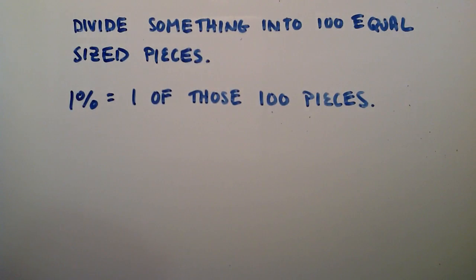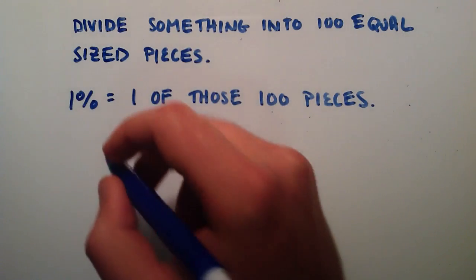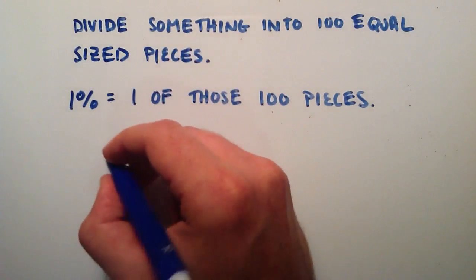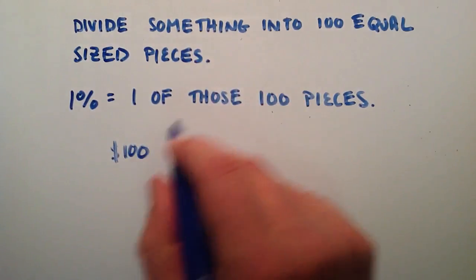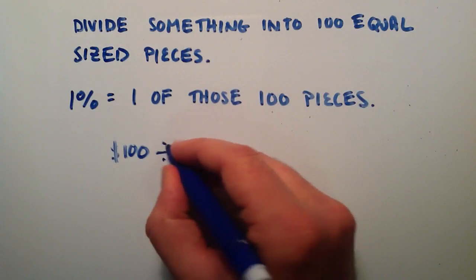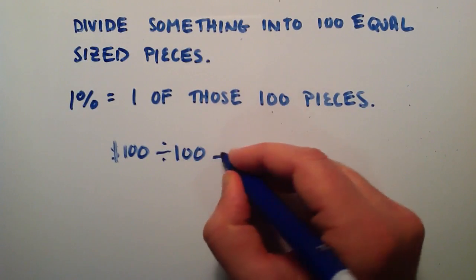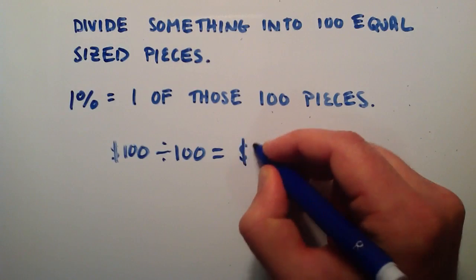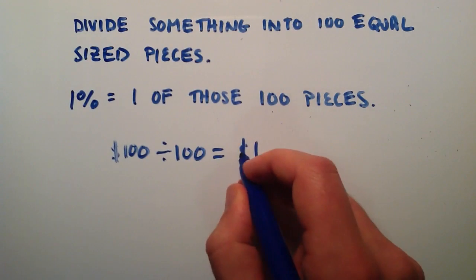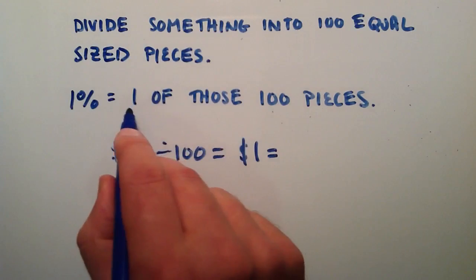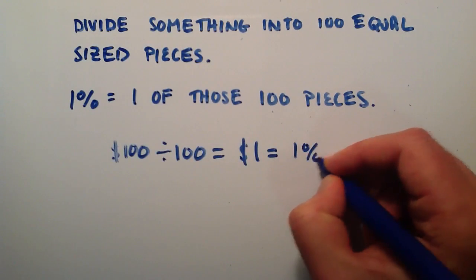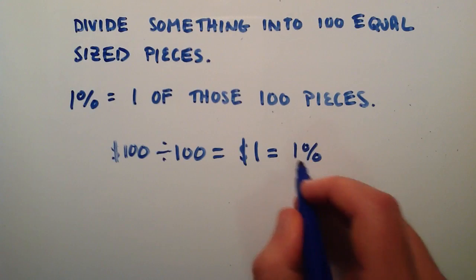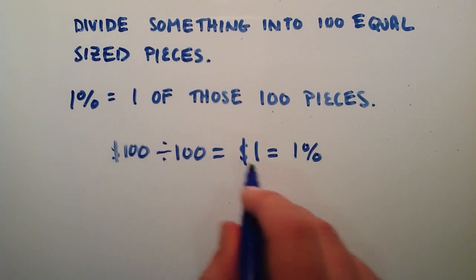So in order to illustrate that concept I'm going to do a couple little examples here. Let's pretend like our something is $100. Well, if we divide that $100 into 100 pieces, then that gives us $1. So 1 piece is equal to $1 and 1 of those pieces is equal to 1%. So this tells us that 1% of $100 is equal to $1.